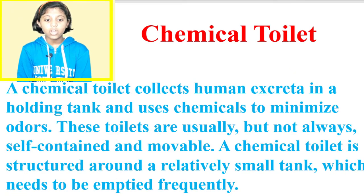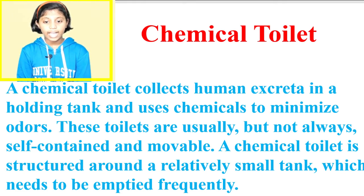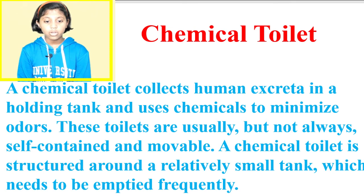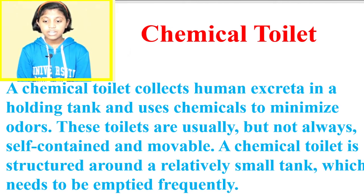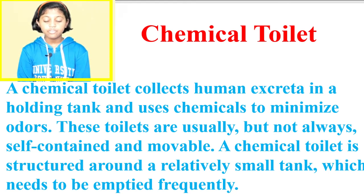Chemical toilet. A chemical toilet collects human excreta in a holding tank and uses chemicals to minimize odors. These toilets are usually, but not always, self-contained and movable. A chemical toilet is structured around a relatively small tank which needs to be emptied frequently.